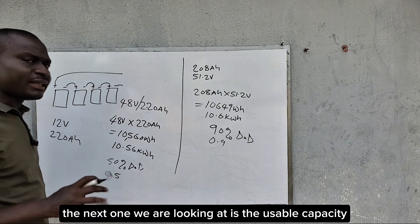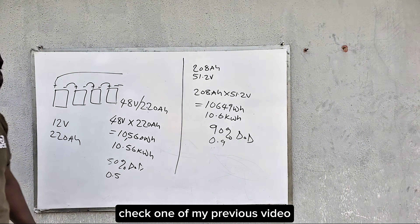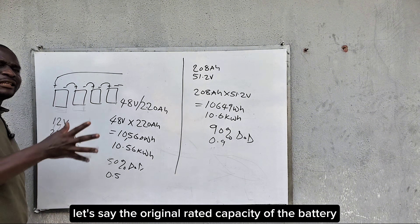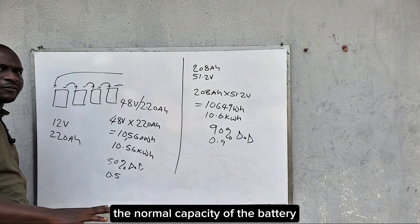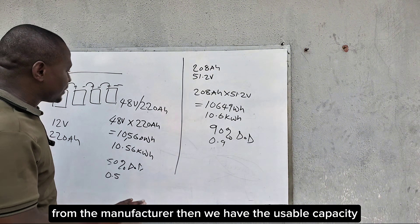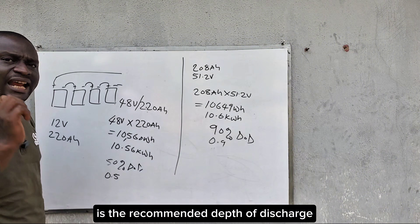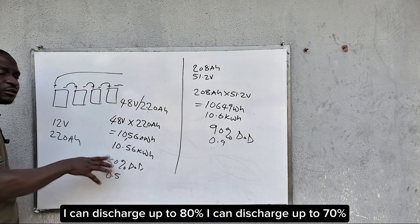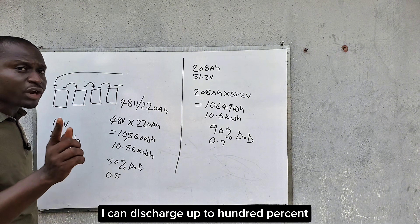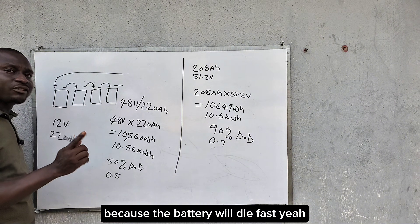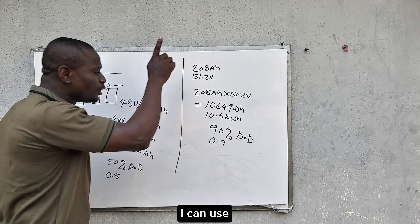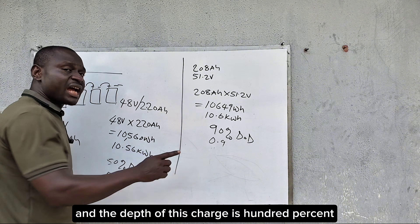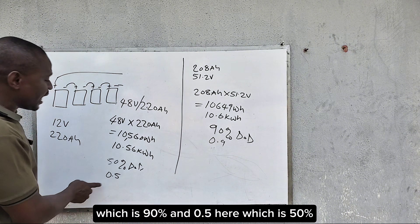The next thing we are looking at is the usable capacity. The nominal capacity is the original rated capacity from the manufacturer. The usable capacity depends on your depth of discharge. I can decide to use 80%, 70%, or even 100%, but discharging to 100% is not recommended because the battery will die fast. At 100% discharge, the state of charge is zero percent and the depth of discharge is 100 percent.